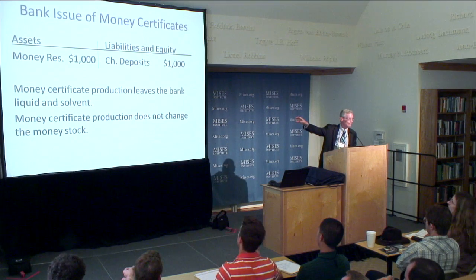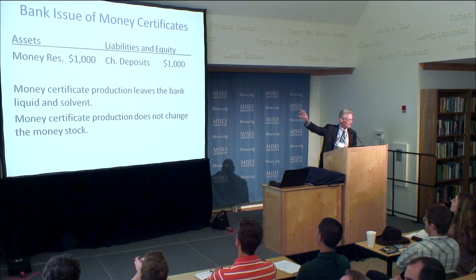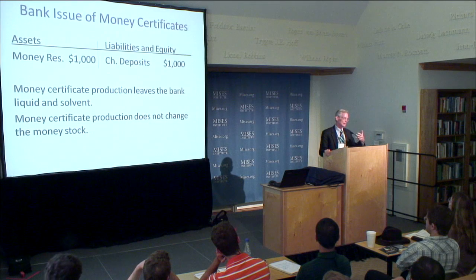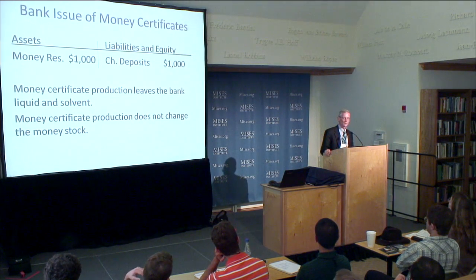If the bank takes ownership of the money, the gold becomes an asset on their balance sheet, with a corresponding liability in the customer's checking account. The key point is that the issue of the money certificate does not impair the bank's liquidity. The bank is exactly as liquid as before — it has an instantaneous liability (the demand deposit, redeemable at any time) matched by an instantaneous asset (the gold held on premises). The time structure of assets and liabilities are perfectly matched.